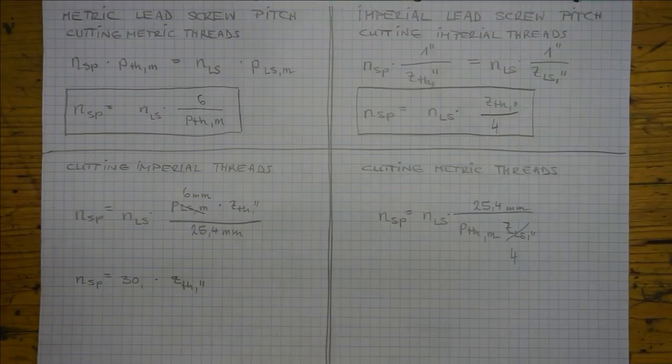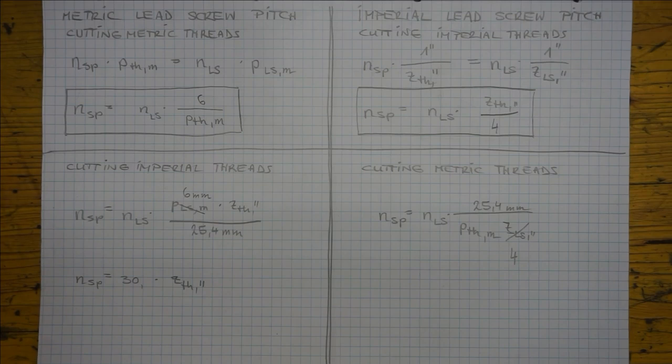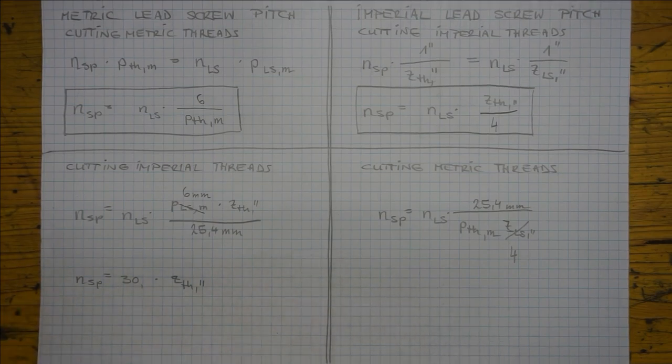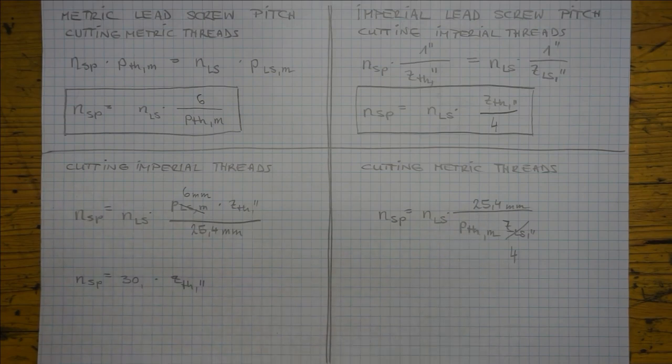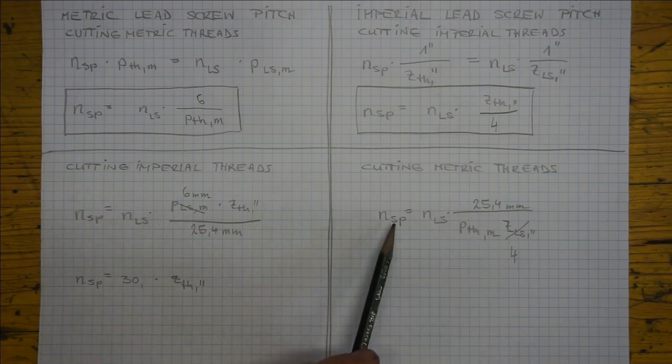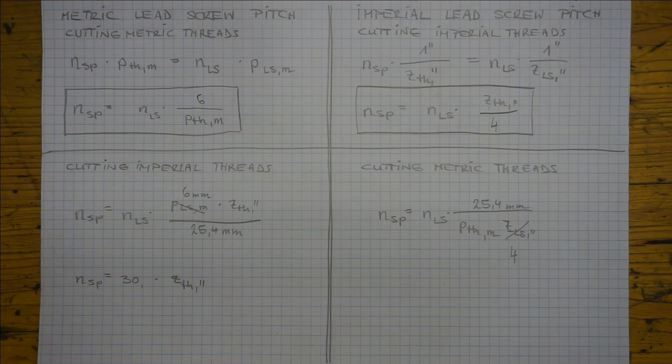And now at long last back to the case in which we cut metric threads on an imperial lathe. It is only possible to get rid of the 25.4 here. In the numerator if we put 254 or as before 127 here. This means now the spindle revolution number is fixed. Not as before the lead screw revolution number. So our equation simplifies to...